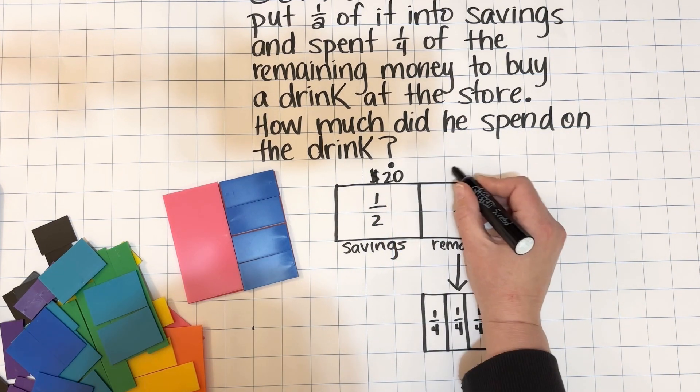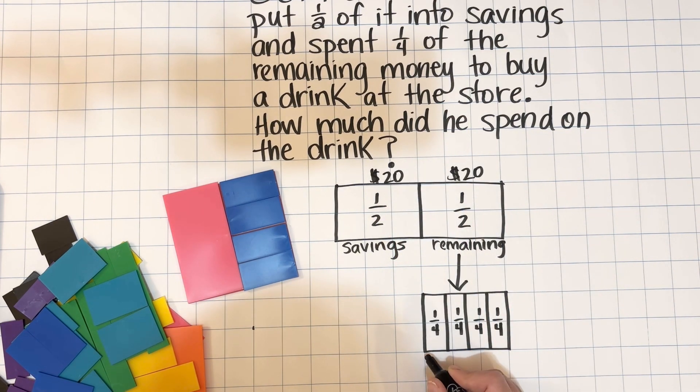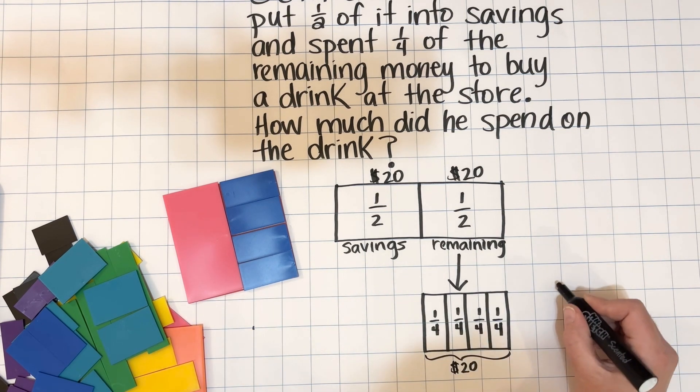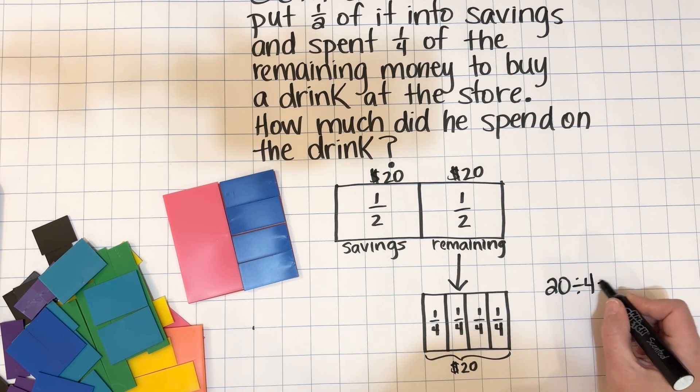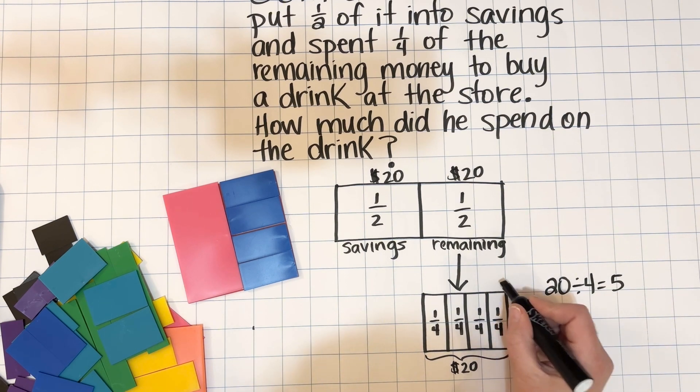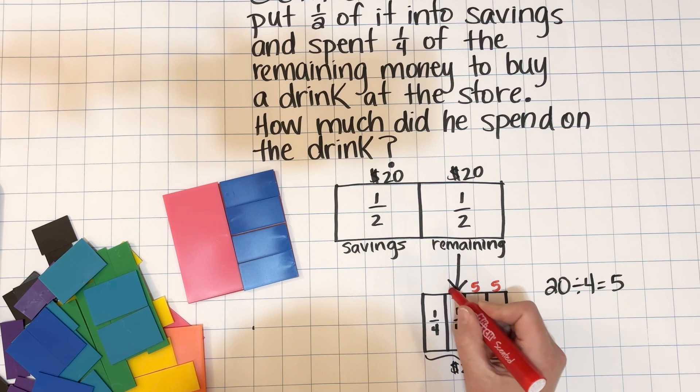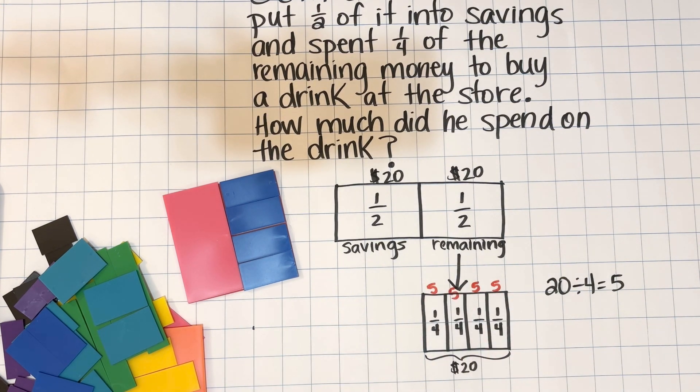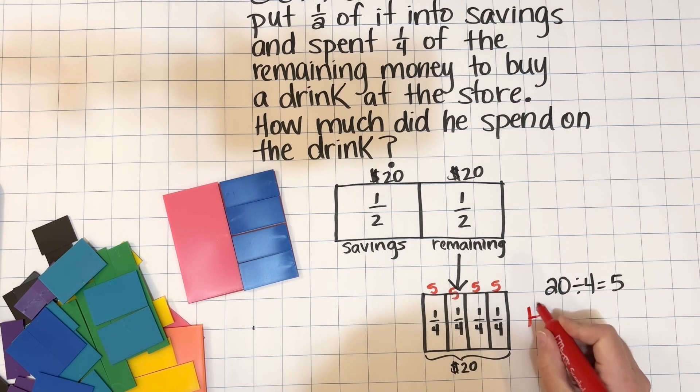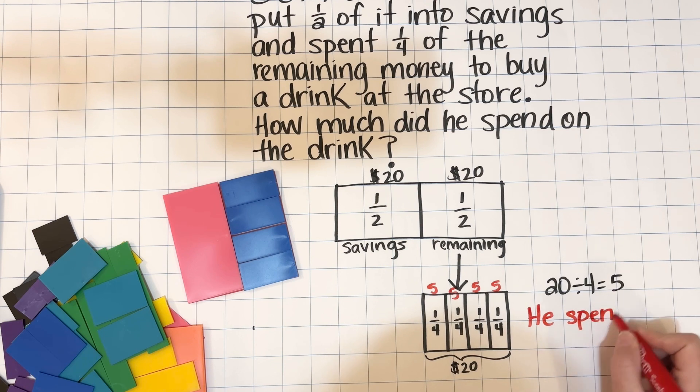Something I forgot to do here at the beginning was mark $20 on each half. That should have been done earlier. So now we know that $20 is being split into fourths. We know that each one of those one-fourth pieces will be $5, so we will label that, and now it is easily clear that he spent $5 on his drink at the store.